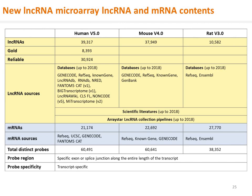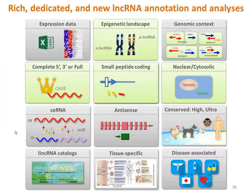Here are the ArrayStar lncRNA microarray content specifications. For human, there are about 40,000 lncRNAs, among which more than 8,000 are golden. On the same chip, the entire protein-coding mRNA catalog is included, providing simultaneous coding and non-coding gene expression profiling. The full-length status of a lncRNA is indicated whether it is complete at the 5' end as supported by CAGE sequencing — cap analysis gene expression sequencing — complete at the 3' end, or complete at both ends.